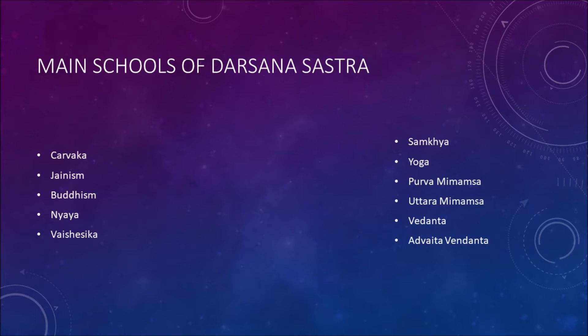In some schools of Darshan Shastra, they say there are exactly these number of schools, wherein you will see Charvak is one of them, Jainism follows up immediately, then comes Buddhism, then they combine Nyaya and Vaiseshika together. However, I prefer Nyaya school to be read separately and Vaiseshika school to be read separately, because differences are present and it is always better to demarcate and draw that line of difference between them.